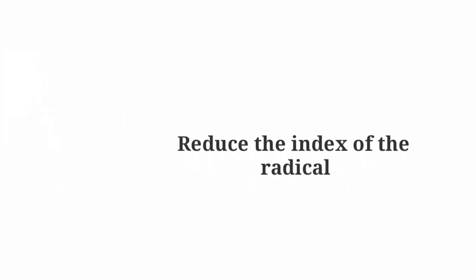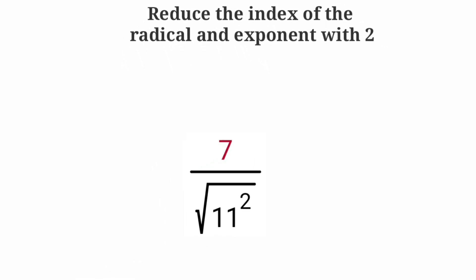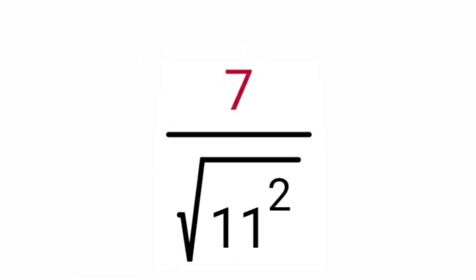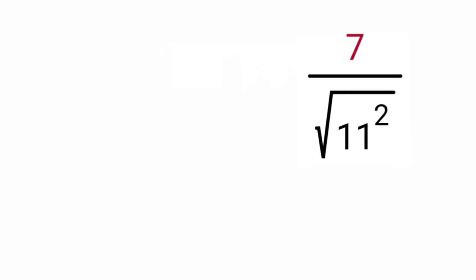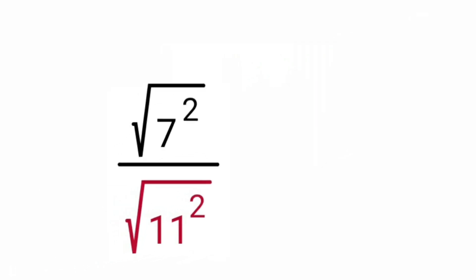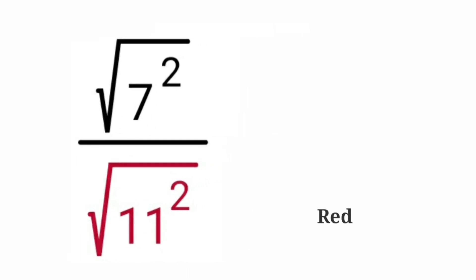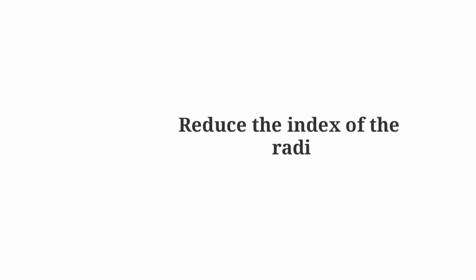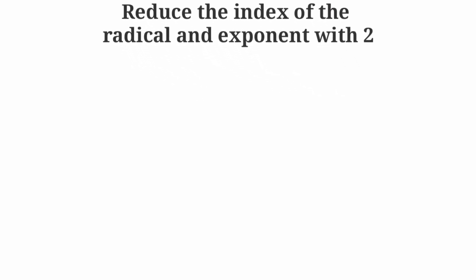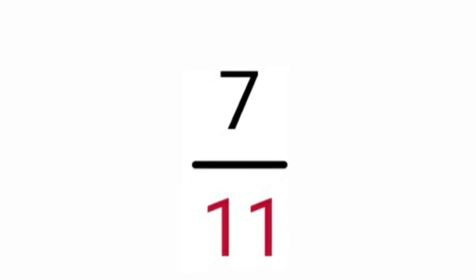Reduce the index of the radical and exponent with 2. The result is 7 upon 11.